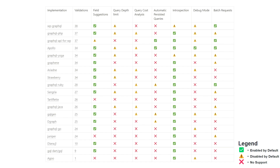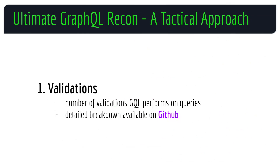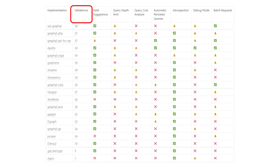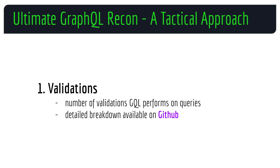Starting off with the validations column — this tells us how many validations or checks occur when a GraphQL query is sent for the specific implementation. You can see the very specific validations on GitHub. As an offensive cyber security professional, this would inform you on the potential ways to break these checks.